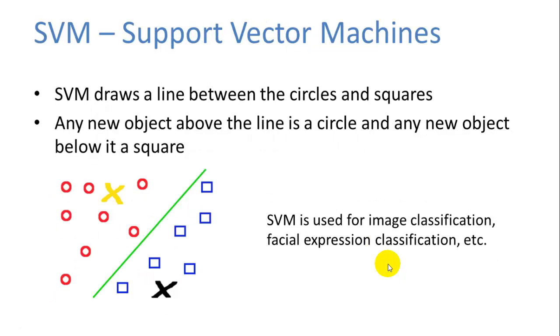Support vector machines are pretty simple. We just draw a line between objects of known types. And then any object on one side of that line is going to be identified as the type of object that is clustered with on that side. And any object on the other side is going to be identified as the object that is clustered with on that side. So it's used for image classification, facial recognition, expression classification, etc. Support vector machines is also one of the simplest machine learning algorithms.